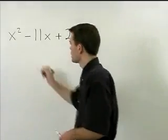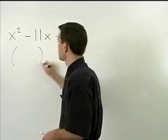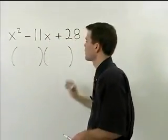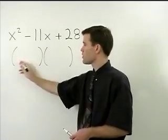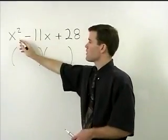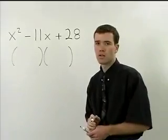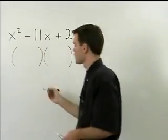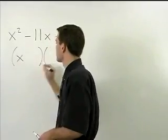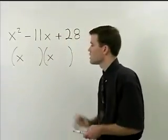The way you do that is by setting up two sets of parentheses that will contain your two binomials. The first term in each binomial will be a factor of x squared. Since x squared factors as x times x, we're going to use an x as the first term in each binomial.